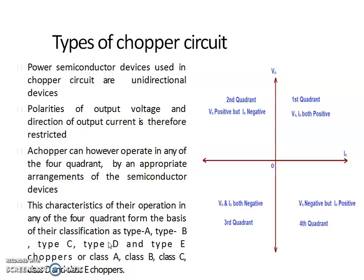In this lecture we are going to discuss about the classification of chopper or DC-DC converter depending upon the quadrant of operation of the chopper circuit. The chopper circuits are classified into Type A chopper, Type B chopper, Type C chopper, Type D chopper, and Type E chopper.